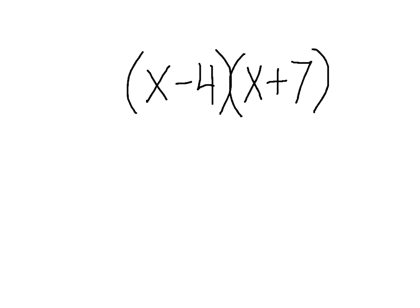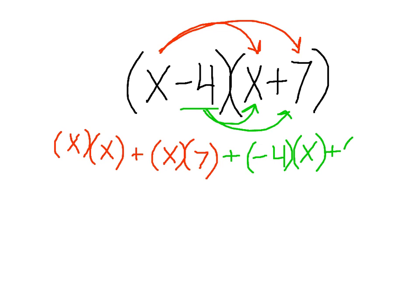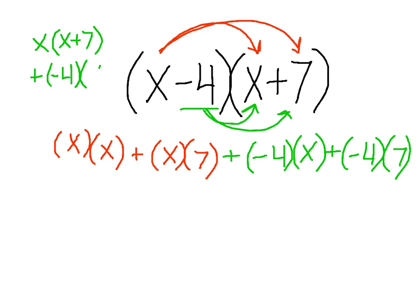We're going to use the distributive property again. We take the first term x and multiply it by both terms in the binomial, giving x times x plus x times 7. Then we take the second term — but this time it's a negative 4. Always remember the sign in front of the number and multiply it to both terms, so we have plus negative 4 times x plus negative 4 times 7. It's like taking x times (x plus 7) plus negative 4 times (x plus 7).